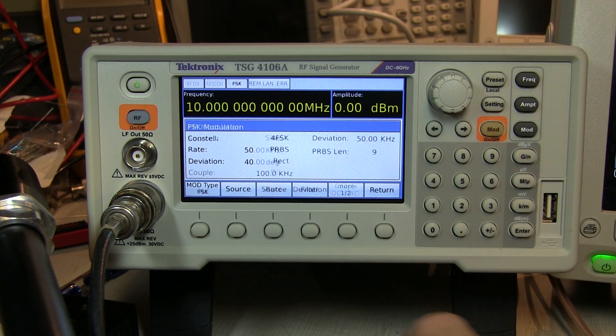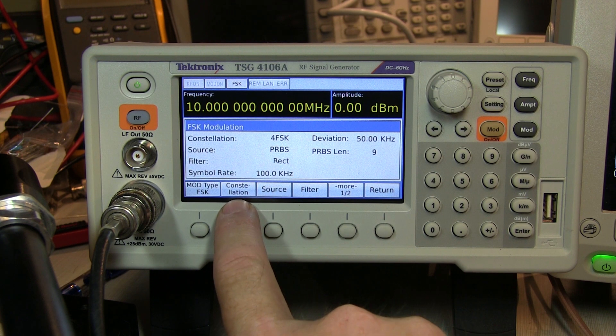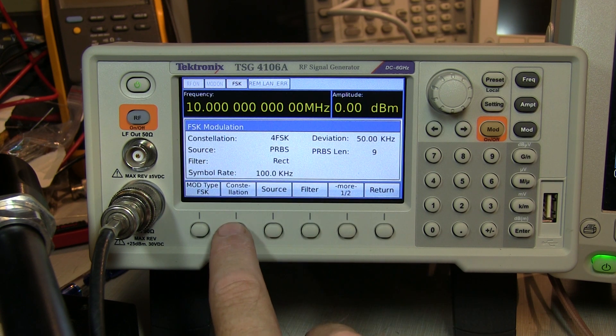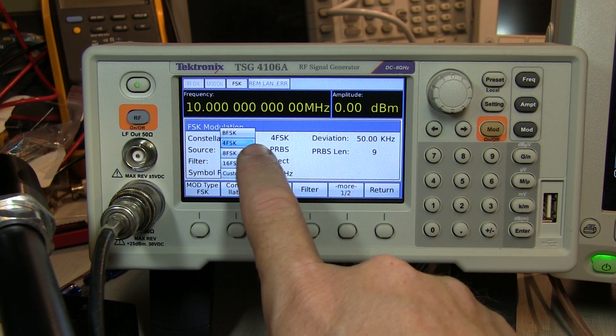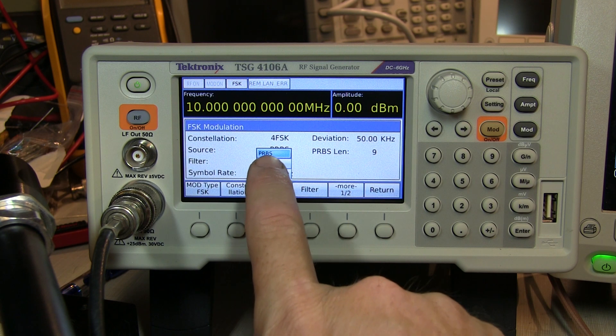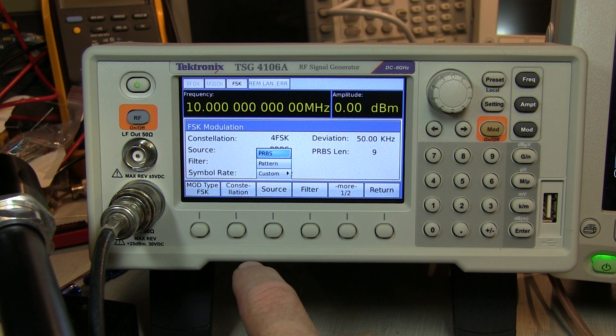Let's say we pick FSK, then we can pick the constellation or the number of points. It defaults to a 4 FSK, but you can pick binary frequency shift keying 4, 8, or 16 FSK, and again, pick the source, whether it's going to be a pseudorandom binary sequence, or a data pattern, or some custom pattern.